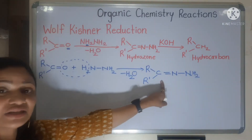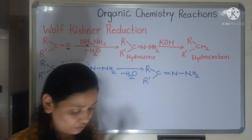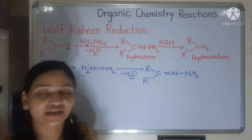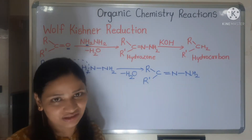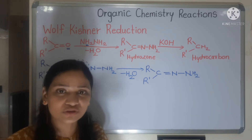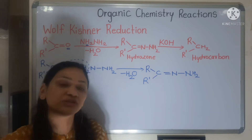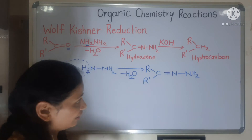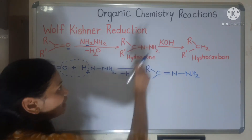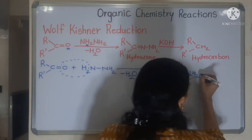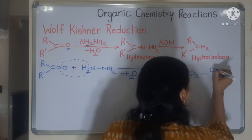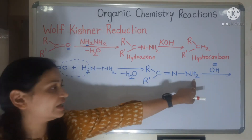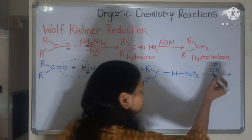After hydrazone is formed, the second step begins. Alkali — that is OH⁻ — attacks the hydrogen on nitrogen. OH⁻ attacks this hydrogen: the bond shifts, nitrogen becomes negative, and H2O is eliminated. So OH⁻ attacked one of the hydrogens on nitrogen and H2O was eliminated.